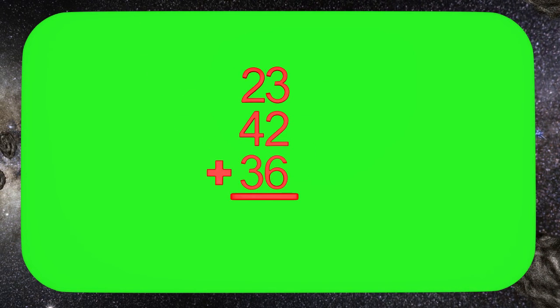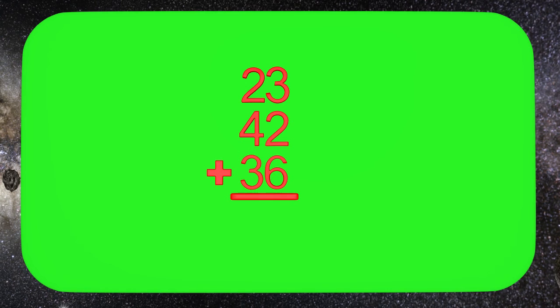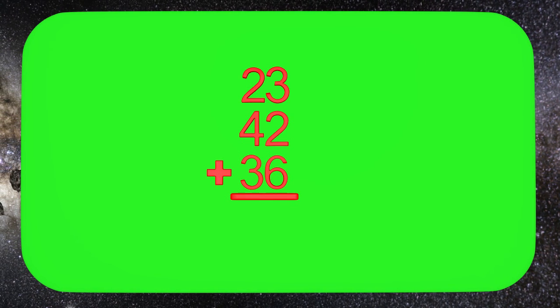To make this easier, we will put the numbers on top of each other. So now we have 23 plus 42 plus 36. Now this can look a little bit scary at first, but we are going to look at a few different methods of adding these numbers.